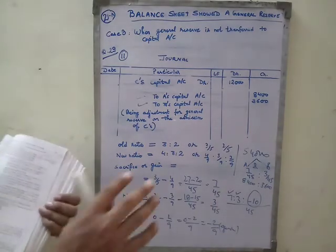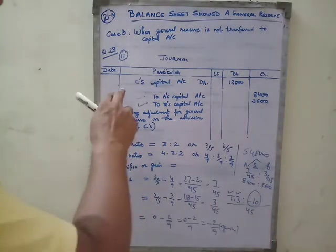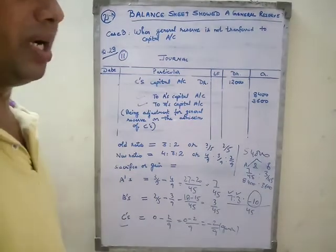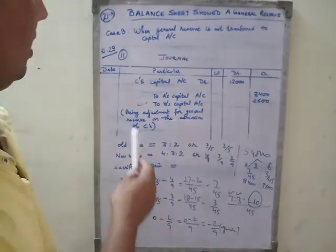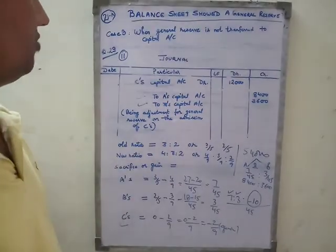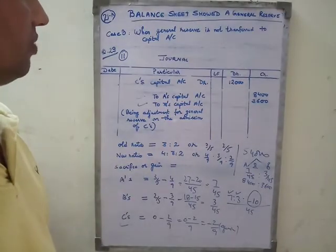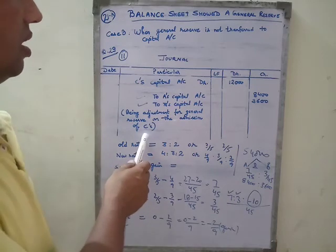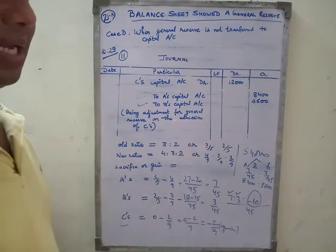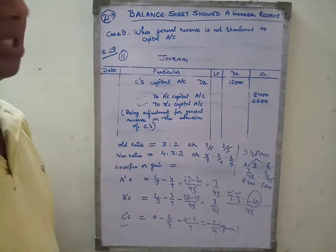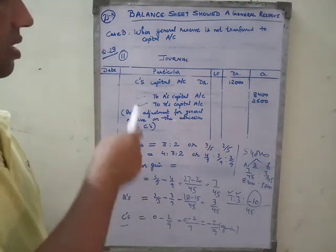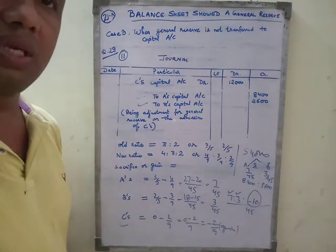So this is the journal entry — C's capital account debited, credited to A's capital and B's capital. The narration is: being adjustment of general reserve on the admission of C. At the time of C's admission, the journal entry is passed accordingly.